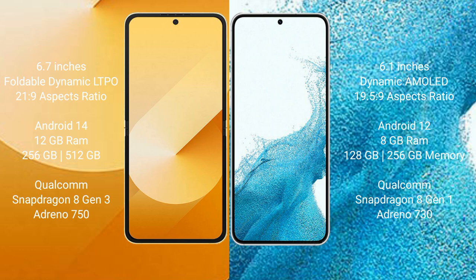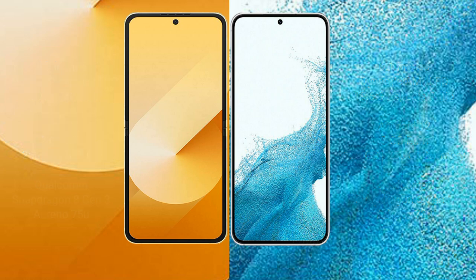Samsung Galaxy Z Flip 6 comes with 12GB RAM and 256GB or 512GB internal storage, with a Qualcomm Snapdragon 8 Gen 1 processor and Adreno 730 GPU. Samsung Galaxy S22 comes with 8GB RAM and 128GB or 256GB internal storage, also with a Qualcomm Snapdragon 8 Gen 1 processor and Adreno 730 GPU.